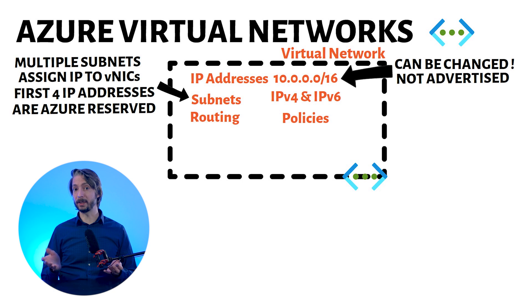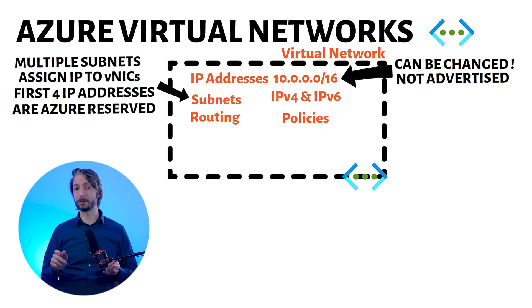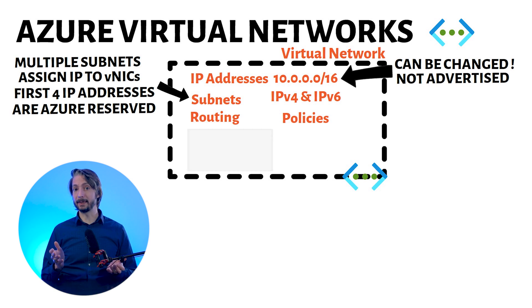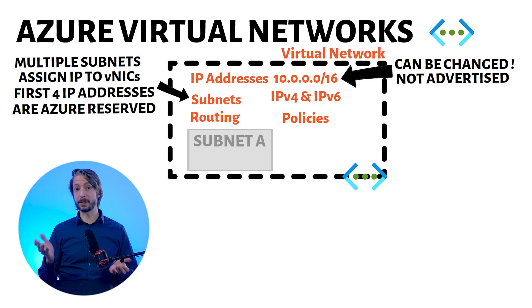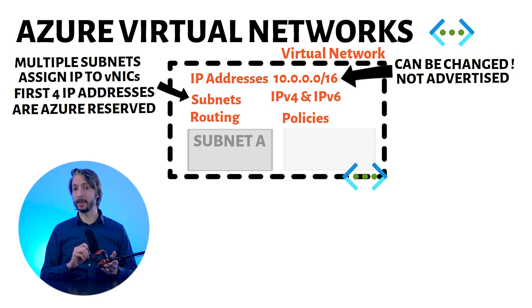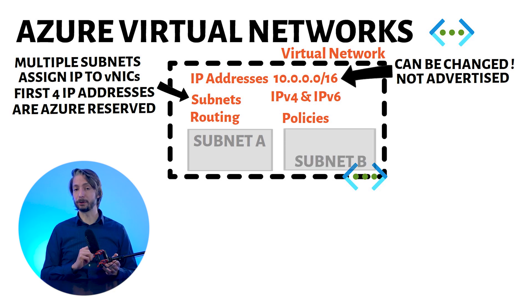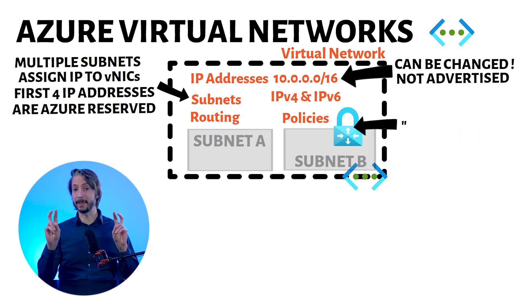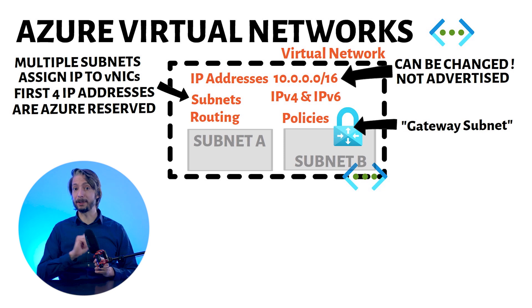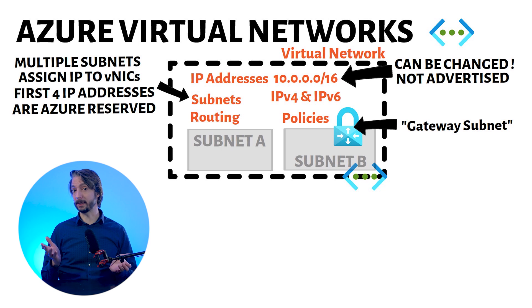There's no concept of VLANs in a public cloud. However, you can create isolation within a virtual network based on your defined subnets. You can create one large subnet encompassing all the virtual network address space, or you can choose to create multiple subnets. However, if you're using a virtual network gateway, Azure requires you to create a subnet with the name 'gateway subnet.' Azure will use this subnet to assign IP addresses to the virtual network gateways.